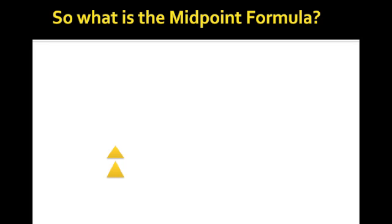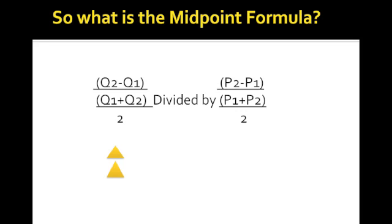So, what is the midpoint formula? The midpoint formula is pretty basic. You take the new quantity minus the old quantity, divided by the average of those two quantities.